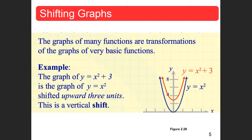The first shift we're going to be talking about is called a vertical shift, which can happen upward or downward. If you take a look at the parent function for a quadratic — y equals x squared, the blue line — we can change it by adding numbers to it. So if I have y equals x squared...